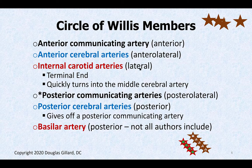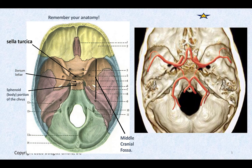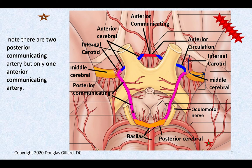Let's look at the members of the circle of Willis. The vertebral arteries come together moving superiorly and anteriorly to form the basilar artery. The basilar artery dead ends into the circle of Willis and splits, giving rise to the posterior cerebral arteries. Part of the posterior cerebral artery is a member of the circle of Willis. The posterior cerebral artery gives off a long skinny branch that goes way up and connects with the terminal part of the internal carotid artery — that's called the posterior communicating artery.